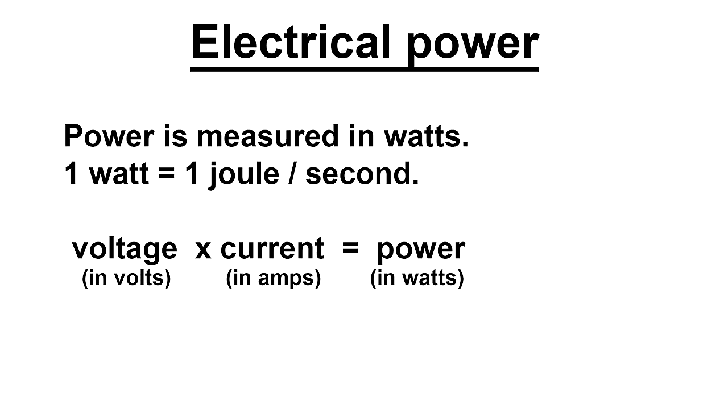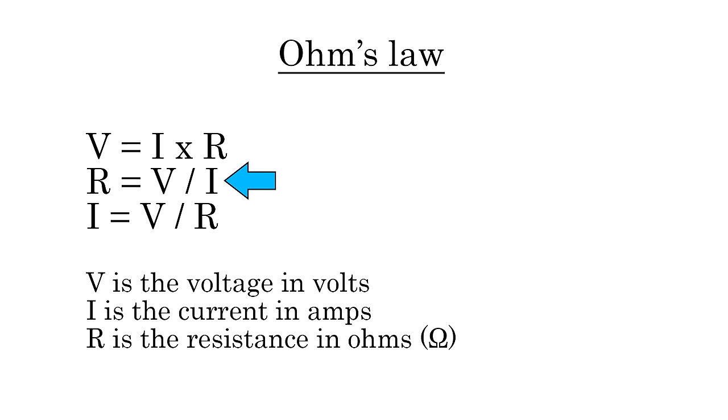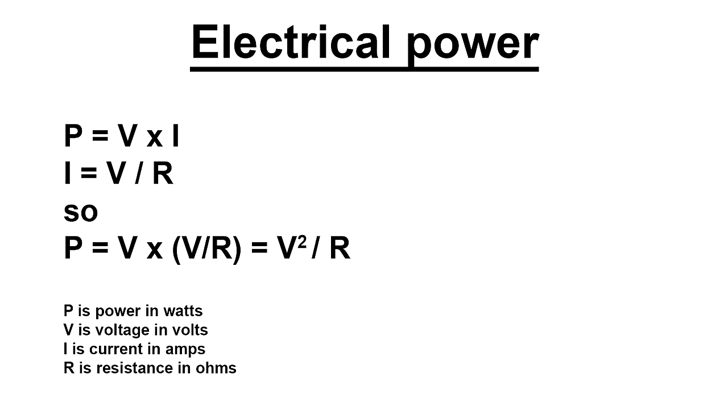We know that voltage times current equals power. And from my previous video about resistance and Ohm's law, we know that voltage divided by resistance equals current. So let's substitute the current term in our power equation with Ohm's law and see what happens. Using a little algebra, you can see that another way to calculate power is voltage times voltage over resistance, or power equals V squared over R. This equation will let us find out the amount of power being delivered to a resistor when all we know is the voltage and the resistance.